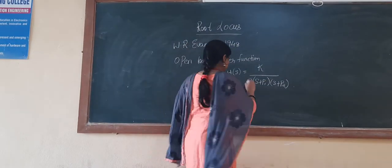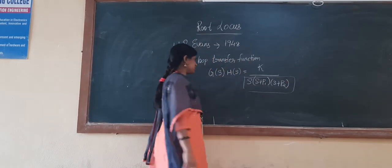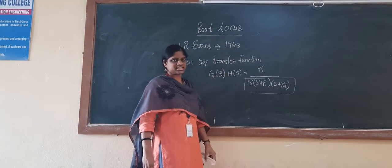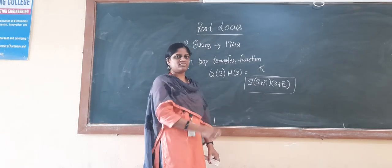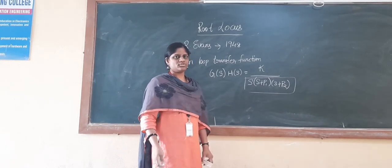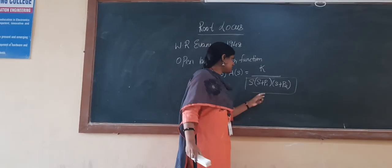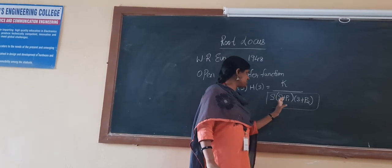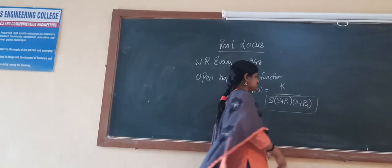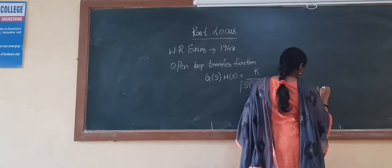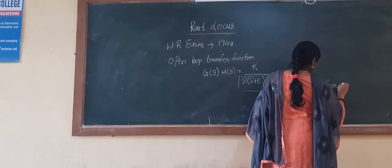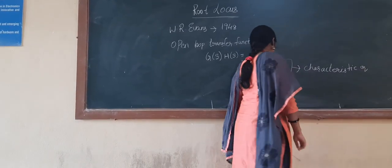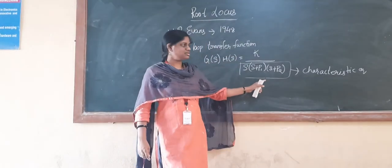Taking this open loop transfer function, we apply the root locus technique to find out the stability of the system. In the denominator side you can have s(s+T1)(s+T2), and this is what we call the characteristic equation. From this characteristic equation you will find out the number of poles.